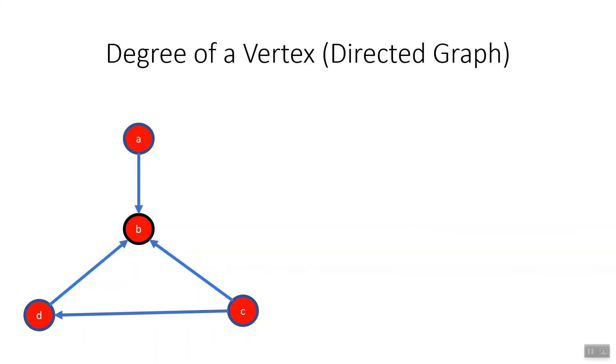In a directed graph, degree is divided into two methods: in-degree and out-degree, where in-degree is the number of edges leading into the vertex, and out-degree is the number of edges leading out of the vertex.